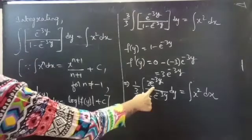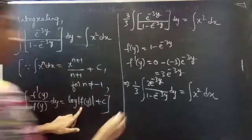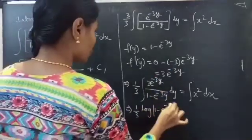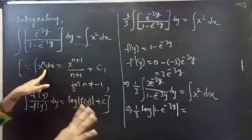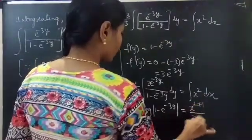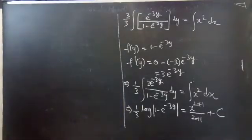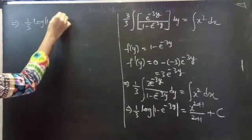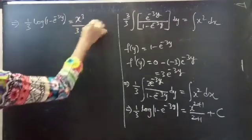Since integral of f'(y) over f(y) dy equals log mod f(y), we get 1/3 times log mod (1 minus e to the power minus 3y) equals integral of x squared dx. For n equals 2, which is not minus 1, we apply the power rule to get x to the power 3 over 3 plus c.